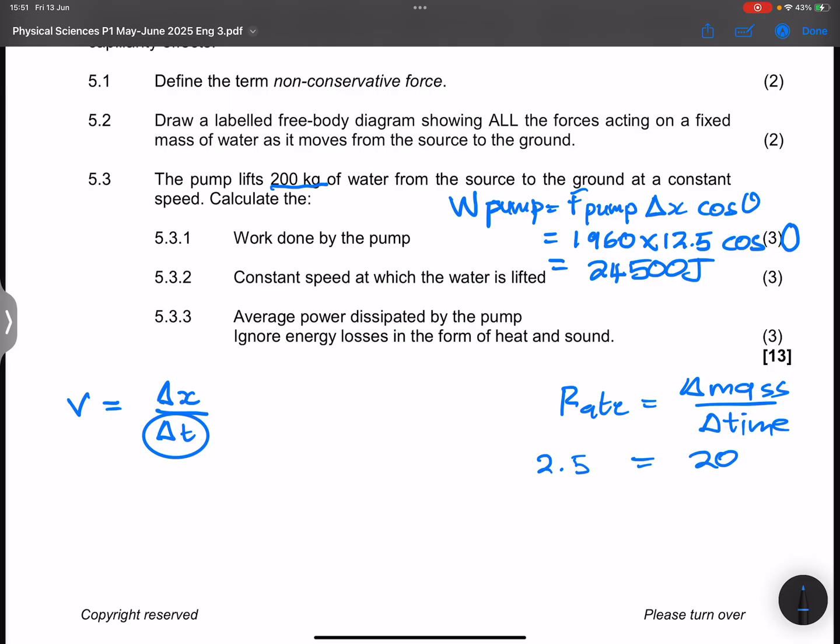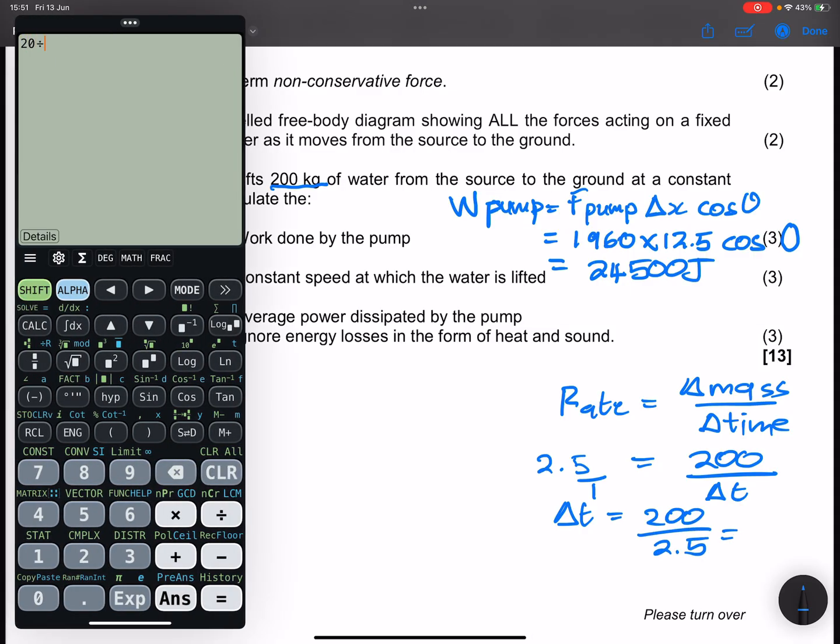So the rate for us would be equal to the change in mass divided by the change in time. And so that is 2.5 kilograms per second. But the mass that we are lifting is 200. And this is divided by time. And so to get that time, if we cross multiply, we're going to get 200 divided by 2.5. And that gives us eight seconds.